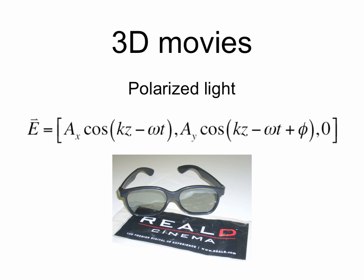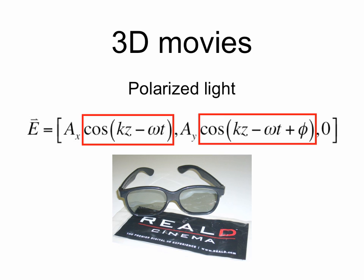And our last example are 3D movies, which can make use of polarized light. If the left eye sees one polarization and the right eye sees a different polarization, that results in a stereoscopic or 3D effect. Here's the equation for an electric field of light with polarization in XY directions — notice the cosine terms. I hope you get the idea that trigonometry is useful throughout science and engineering.